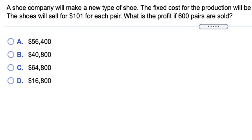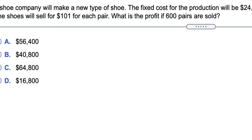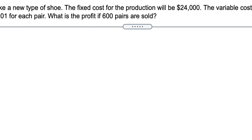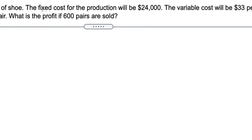Here is the question: a shoe company will make a new type of shoe. The fixed cost for the production will be $24,000.